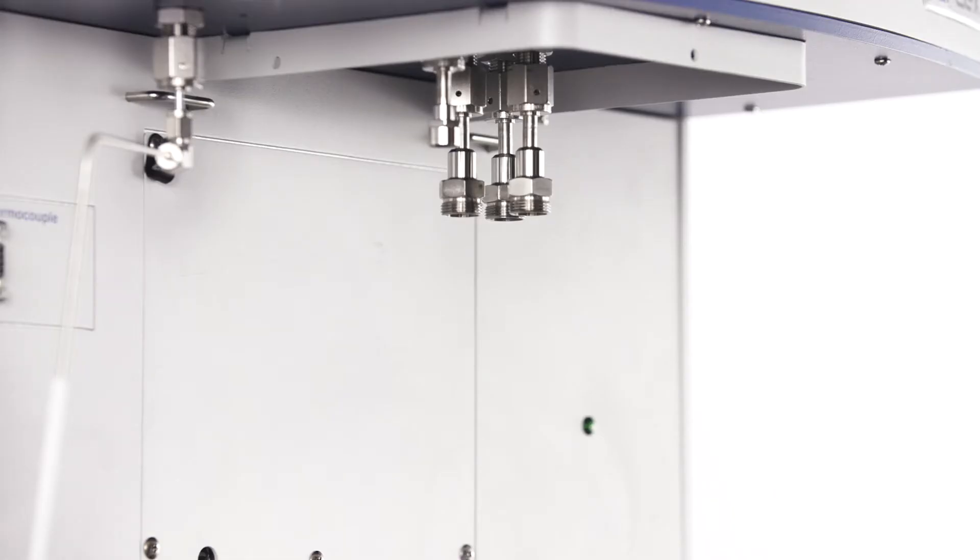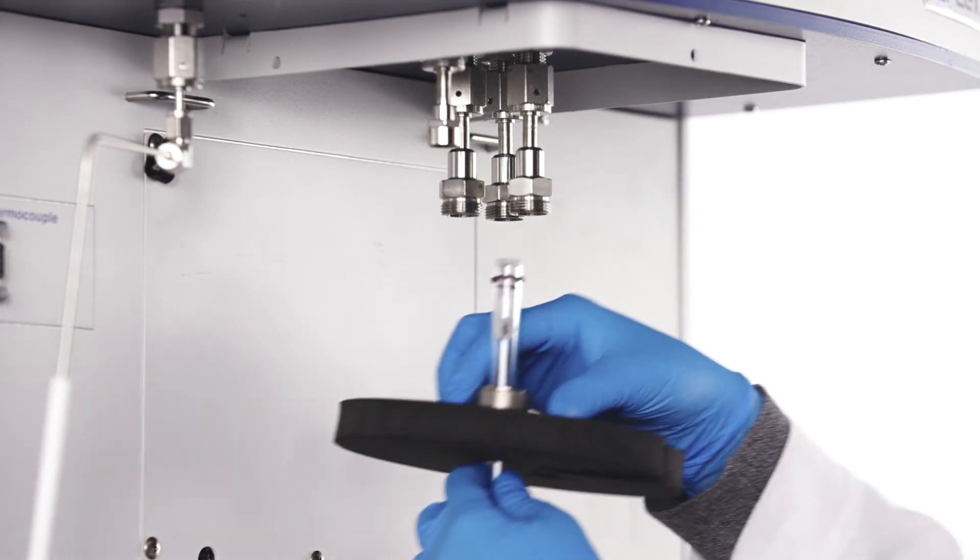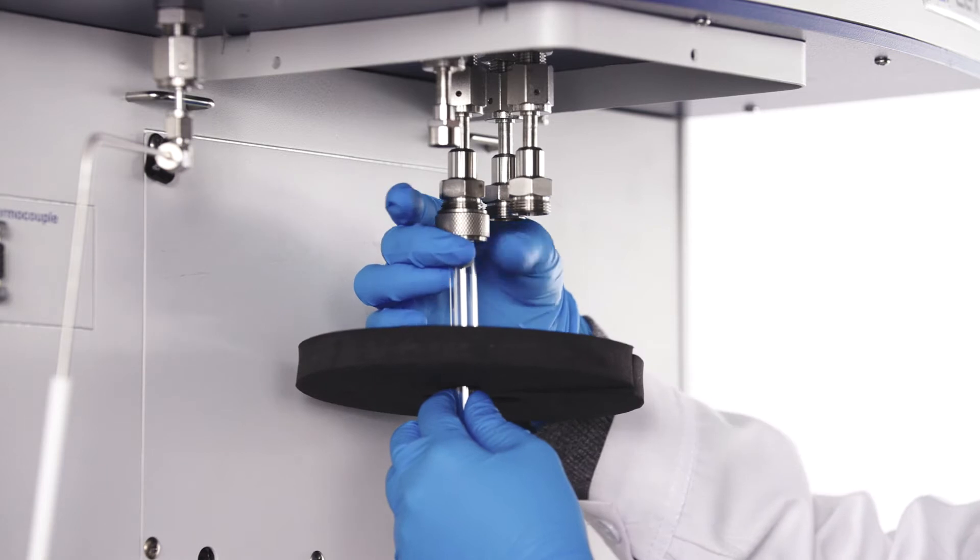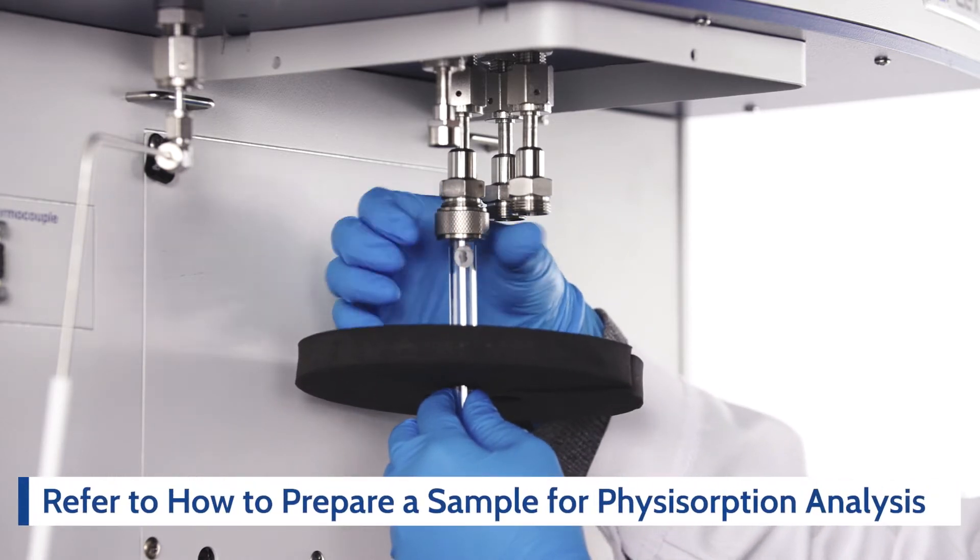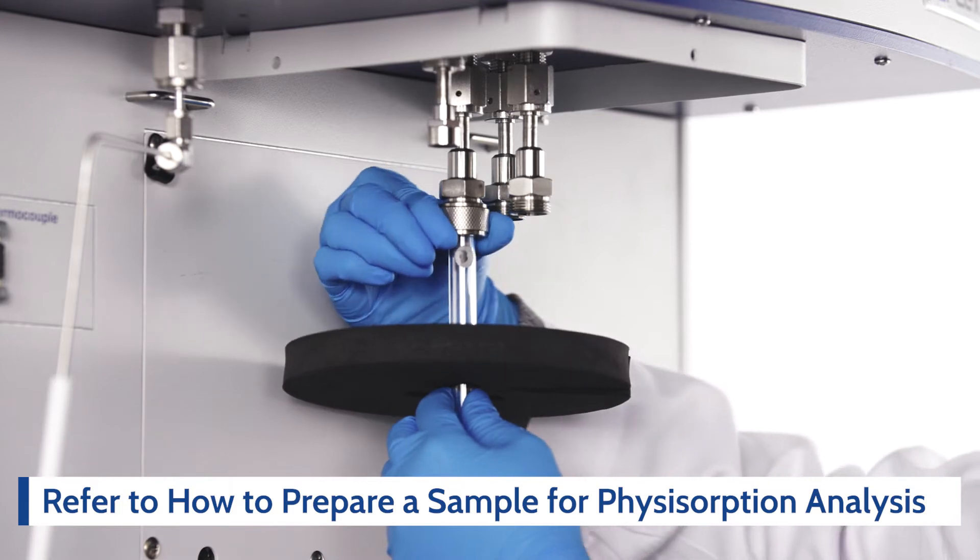Slide the isothermal jacket, doer cover, nut, ferrule and o-ring in order. Tighten the nut until it is finger tight. Please refer to the 3FLEX Physisorption Sample Preparation video for more information.